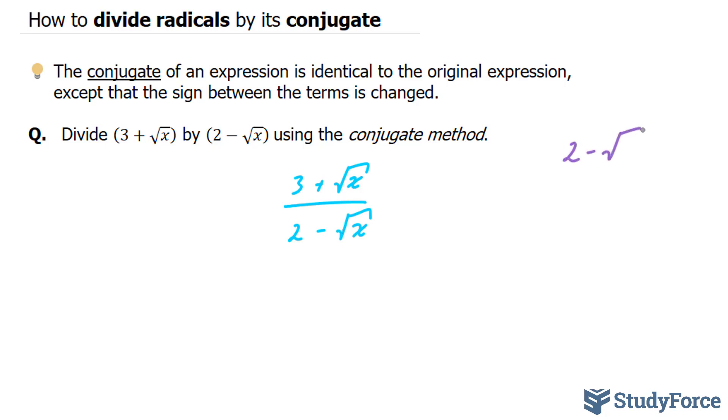Our denominator is 2 minus the square root of x, and its conjugate is 2 plus the square root of x. So let's multiply the numerator by 2 plus the square root of x and the denominator by the same thing.